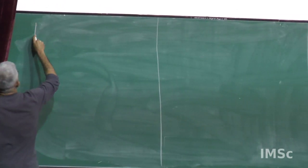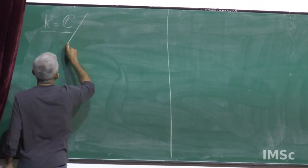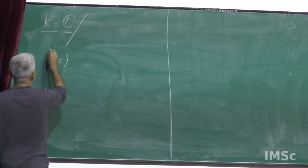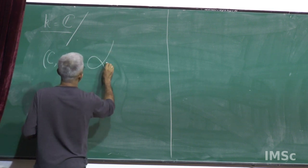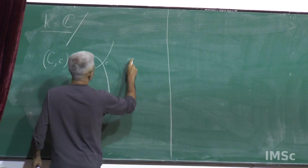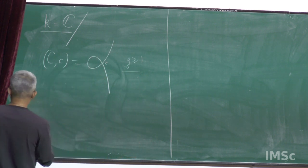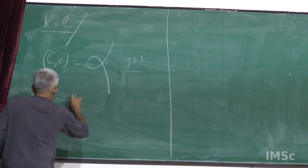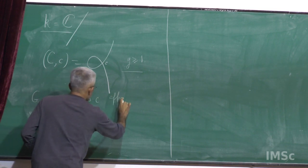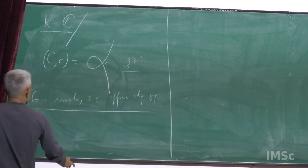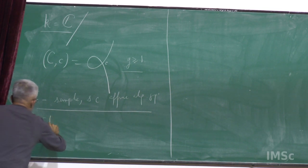So let me begin with some basic assumptions. My field is the field of complex numbers. Notations: I usually denote by C an irreducible nodal curve with the node, which I denote by small c, and I assume that the arithmetic genus is greater than or equal to 1. And my G will be a simple, or what is called almost simple, simply connected group, and I also fix the usual datum.